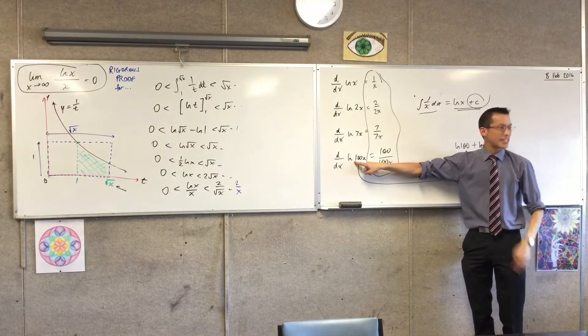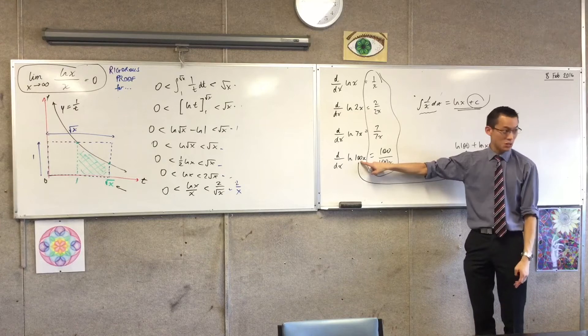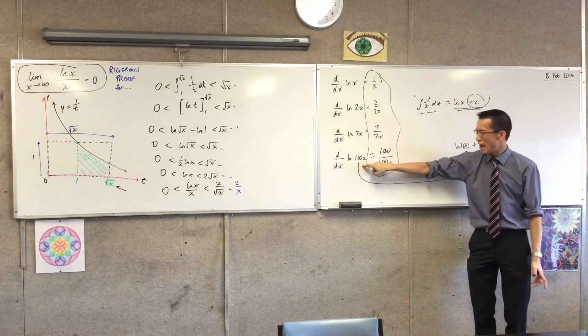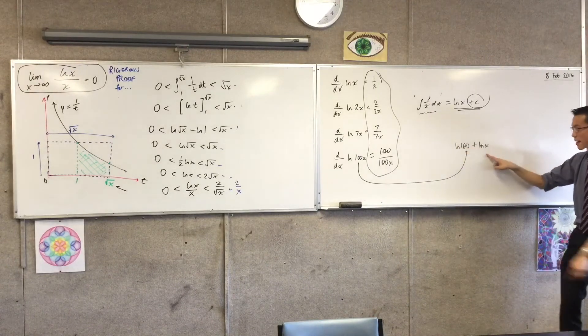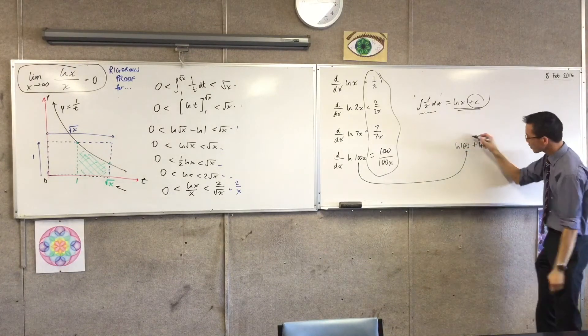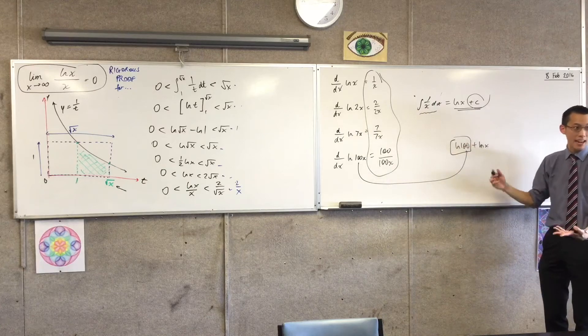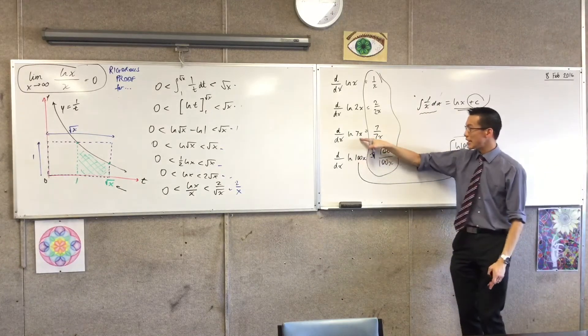What a log is, is it's amount of time. However long it takes you to grow to 100 times your size and then x times your size, right? Or you could just grow for that amount of time and then that amount of time separately. But look at this guy. It's just a constant.